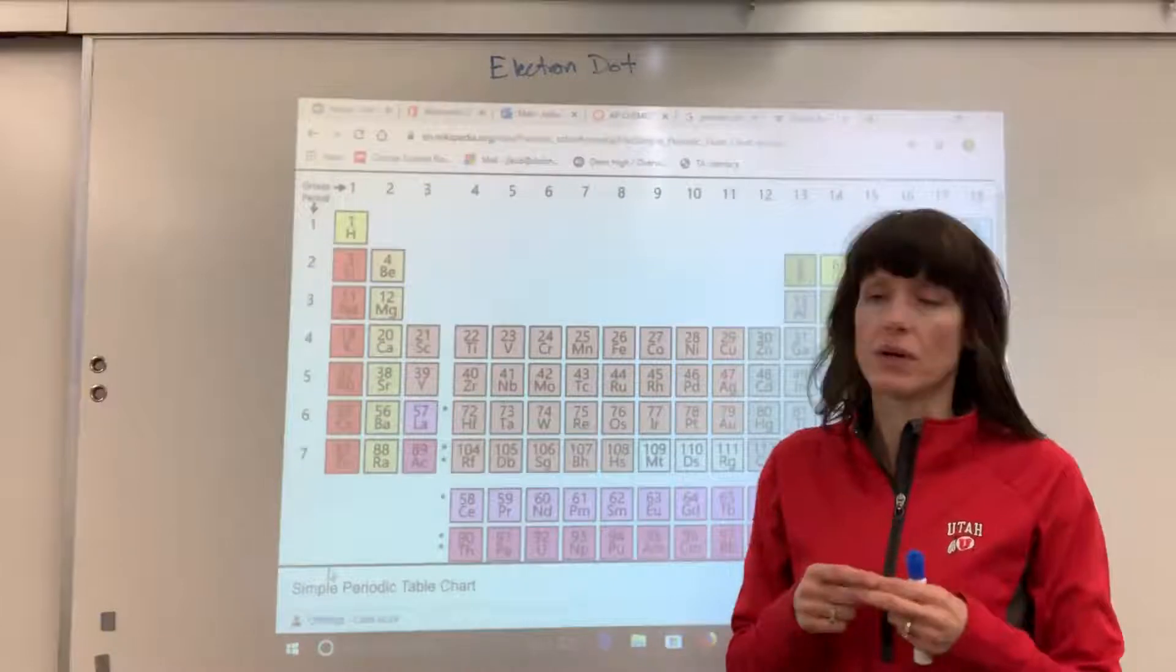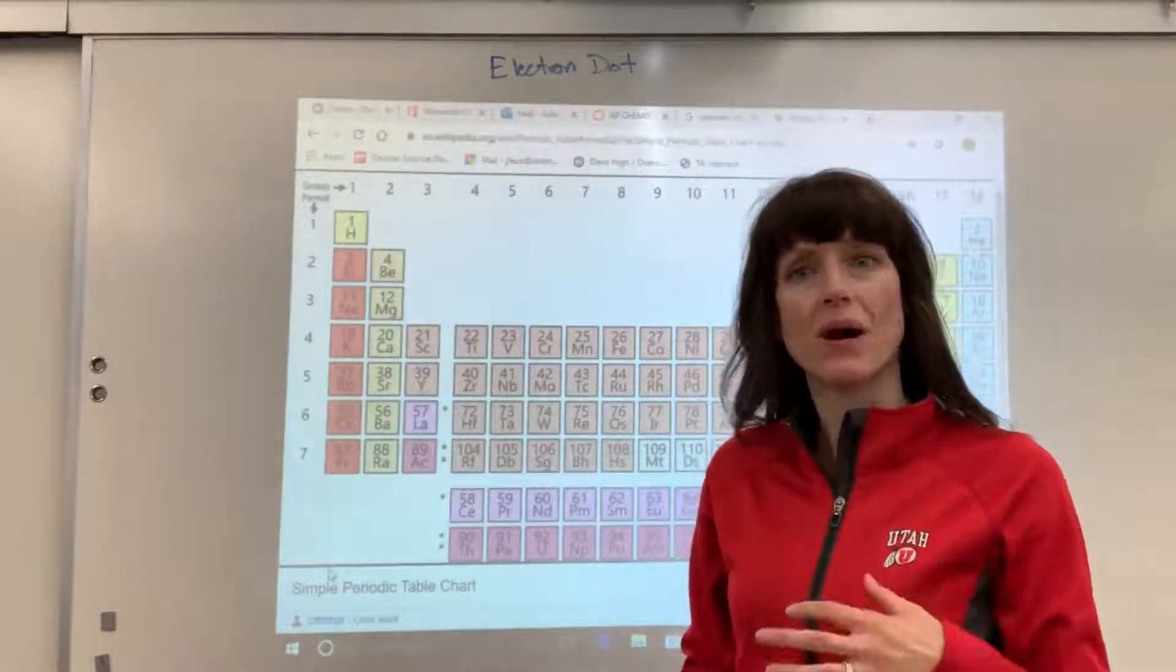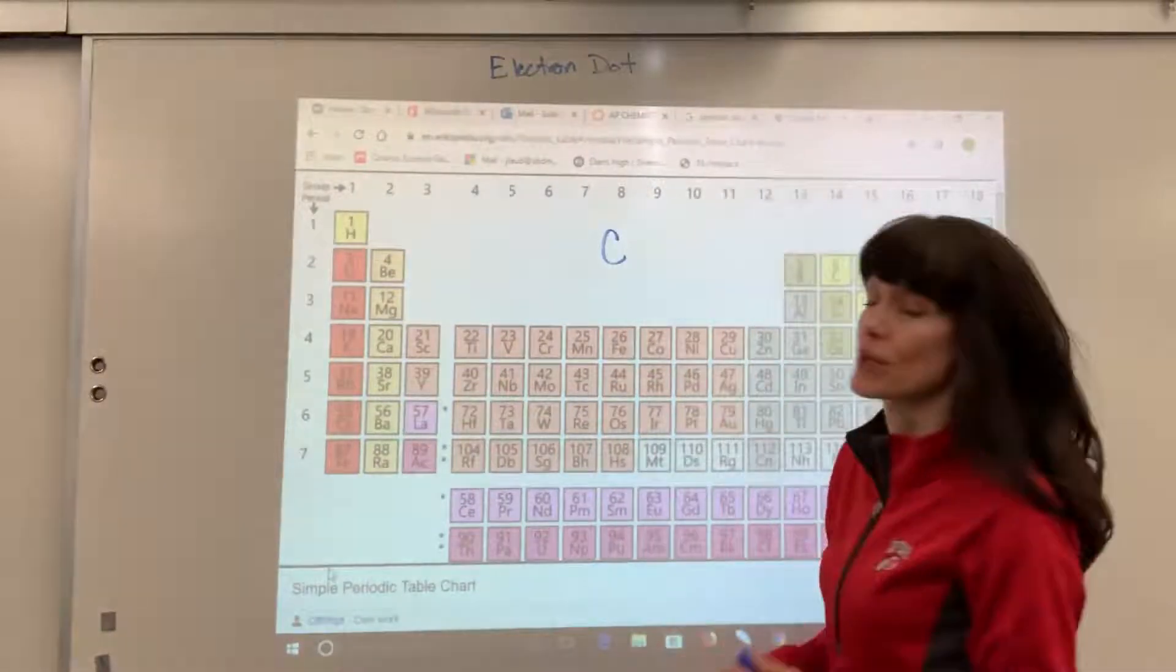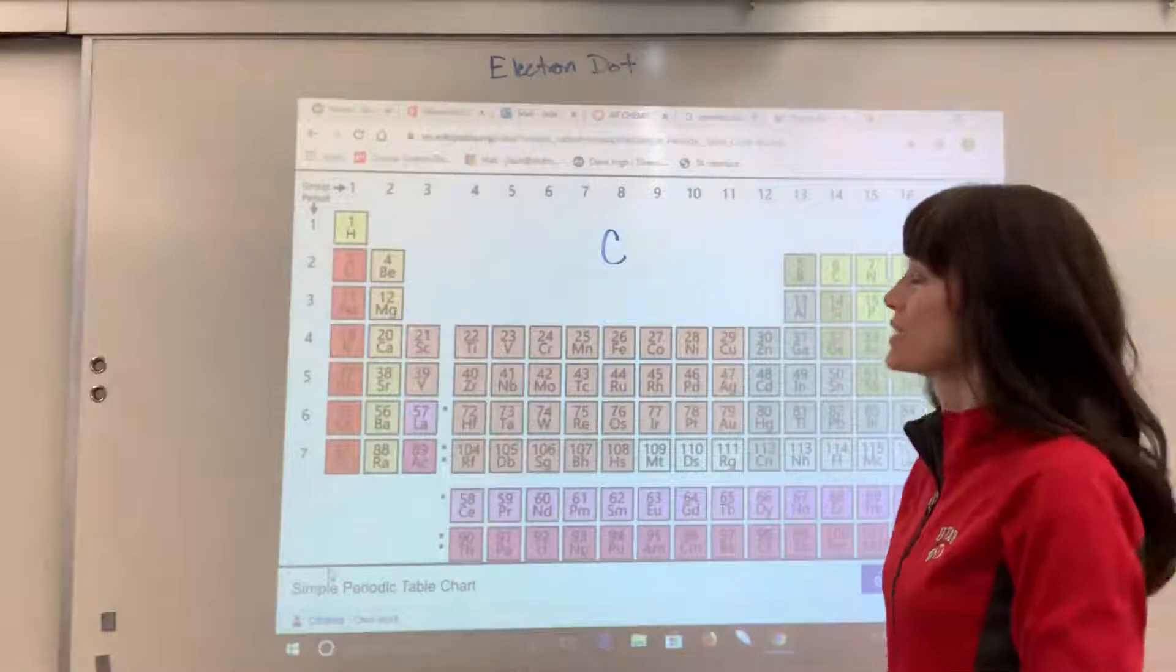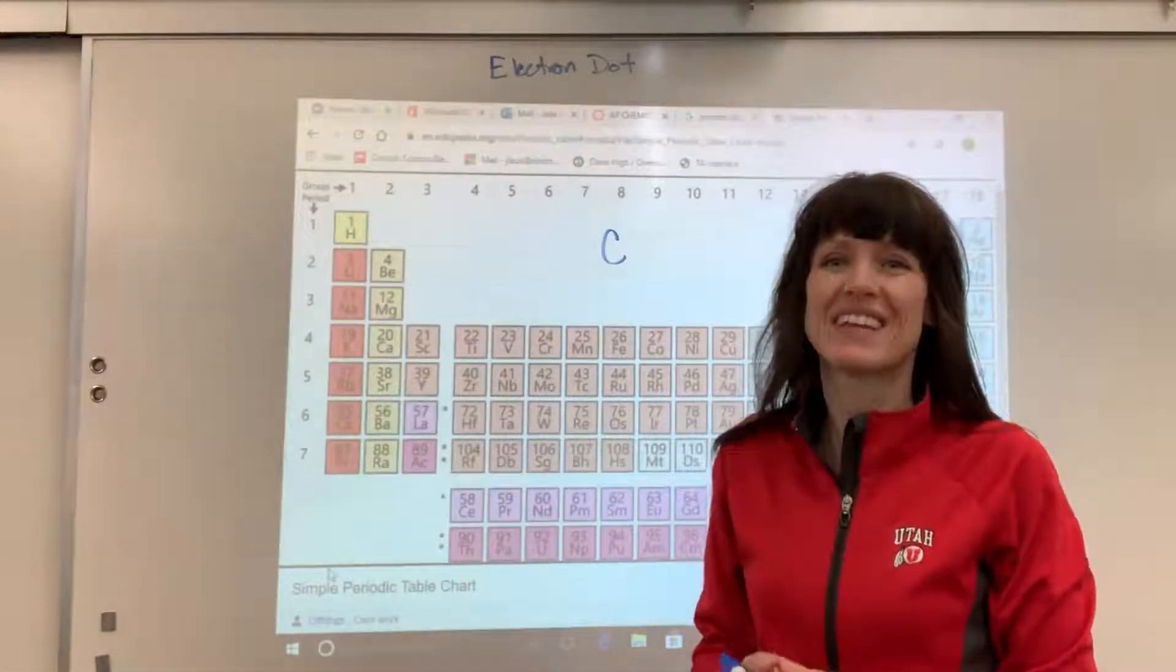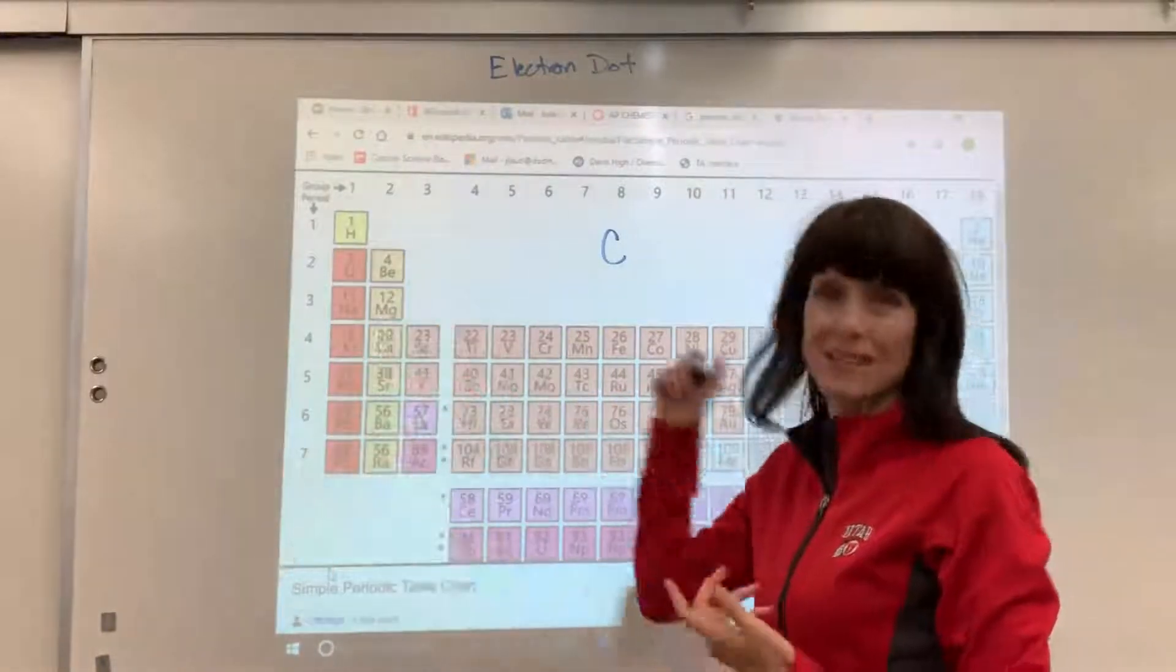We take an element symbol, for example carbon, and we want to represent symbolically the valence electrons for that element. So I've got carbon. Let's review valence electrons. We're going to count the S and the P block because valence electrons are the electrons in the outermost energy level, which will be the S and the P block.